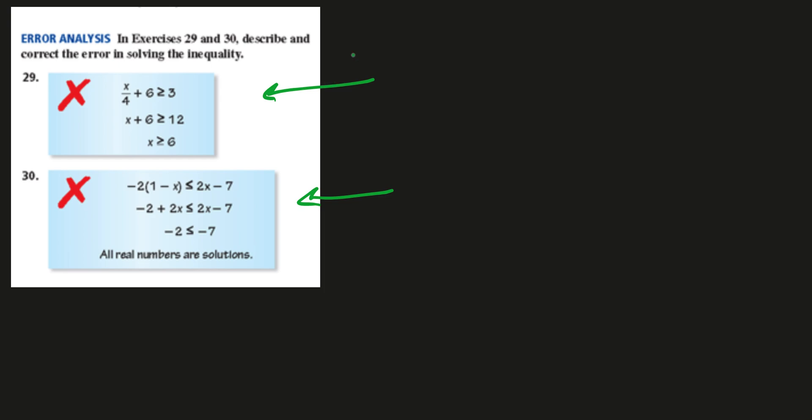We have to describe the person, whoever did this, the error that the person is making and then you have to correct it. I like these problems here. So let's see, 29, so it's x over 4 plus 6 is greater than or equal to 3. So this person is, what this person is doing is it seems like the person multiplied 4 to both sides.